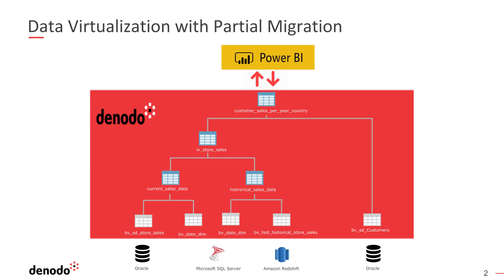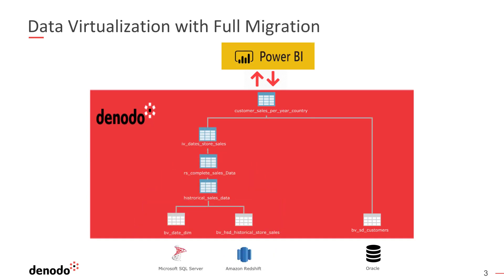With partial migration, a subset of data is migrated to a cloud source — in this case Redshift — and the migration is ongoing. It does not have to be a one-step migration, thus leading to iterations as needed. Whereas with full migration, the entire data has been moved to Redshift, the ETL flow is updated to use the Redshift-based warehouses, and the on-premise Oracle database has been decommissioned.